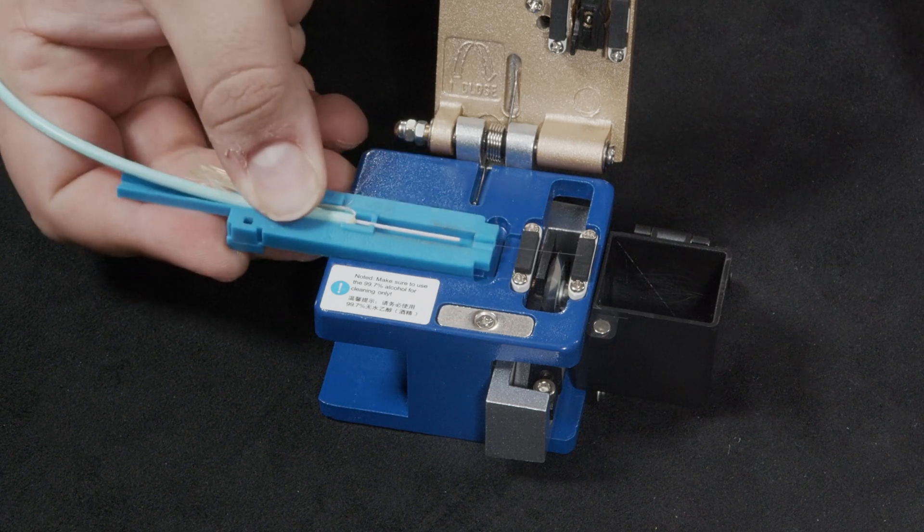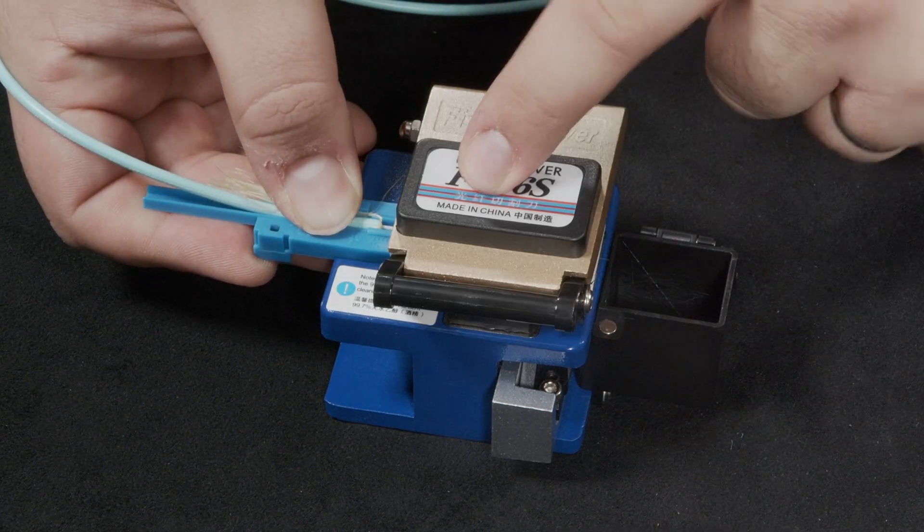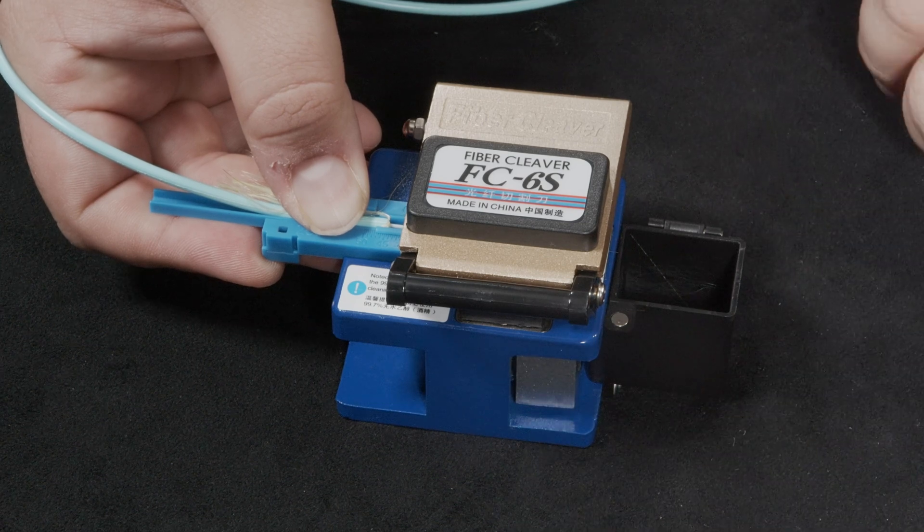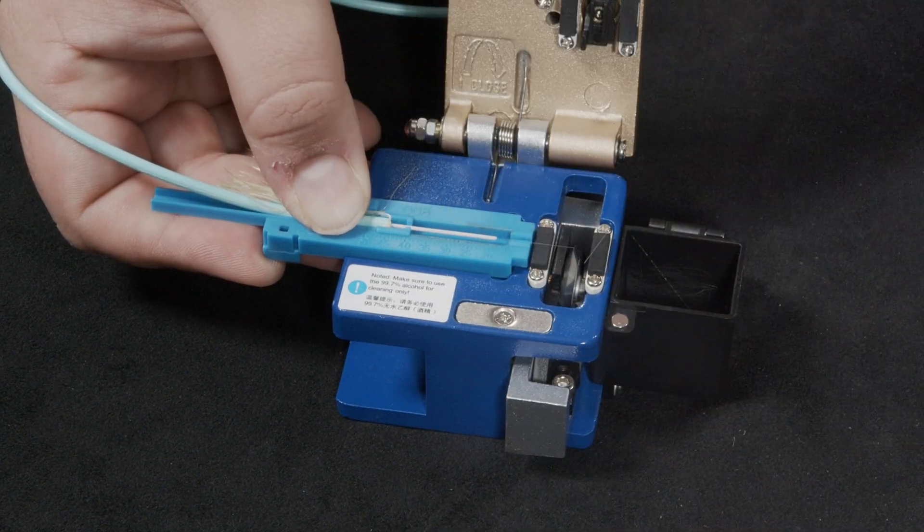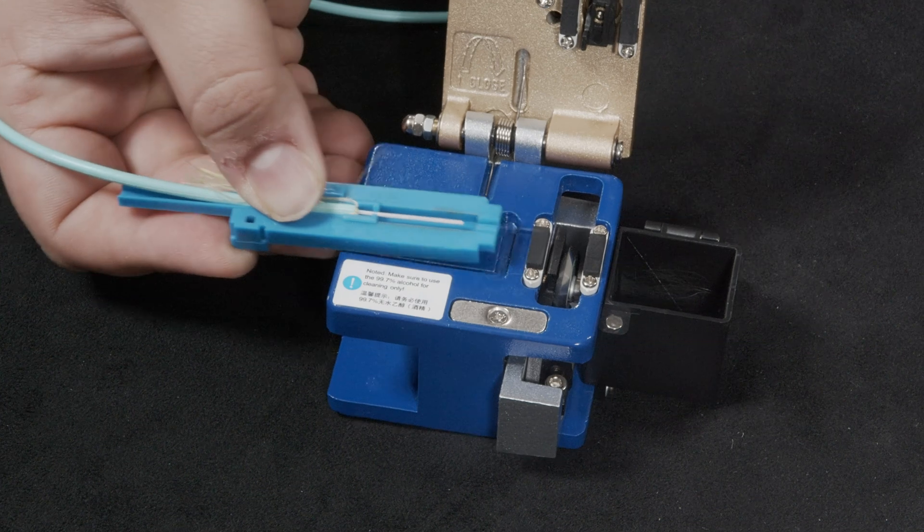Now, place the guide into the cleaver and ensure the waste bin is open. Close the cleaver and press the silver slide to cleave. Make sure that any excess fiber goes into the bin.